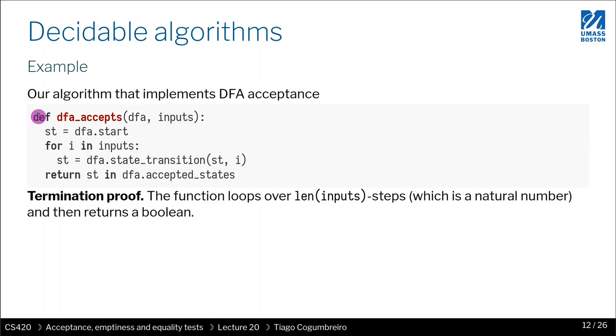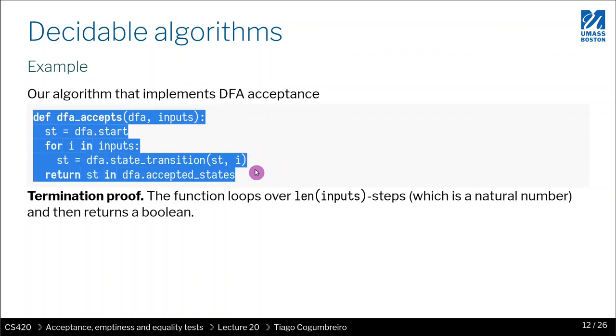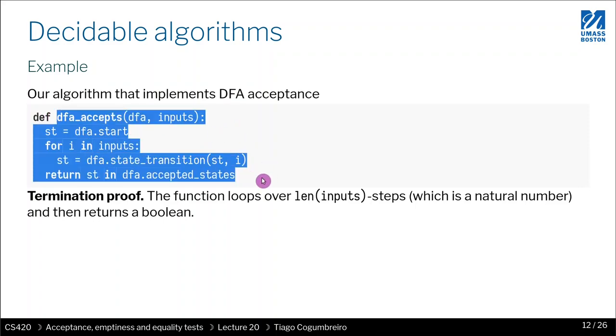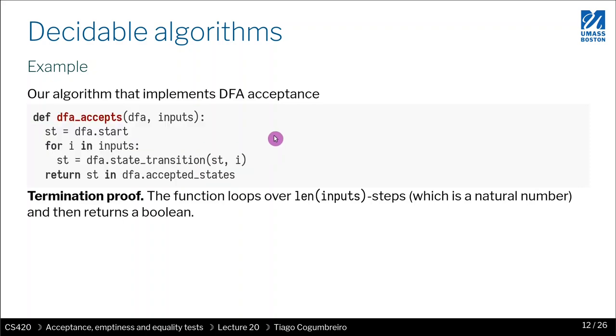Because as you know, the DFA's transition function always returns the following state. If at the end of the last character you've reached an accepted state, that means your DFA has accepted the input. This is a correct implementation of accepting an input by a DFA. This function will return yes or no if and only if the DFA accepts the input.